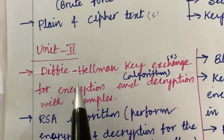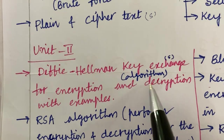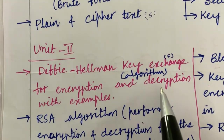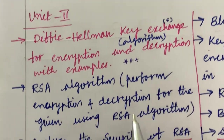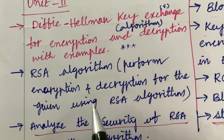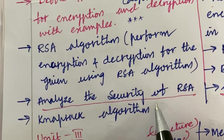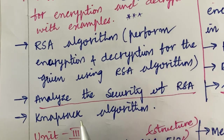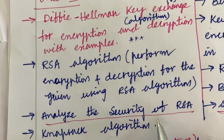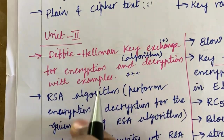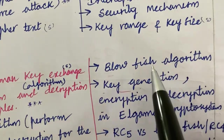Let's move on to Unit 2. Unit 2 is all about the Diffie-Hellman key exchange algorithm — encryption and decryption with an example — which is one of the very important and lengthy long questions. RSA algorithm: perform encryption and decryption using RSA algorithm. Analyze the security of RSA may be a short question, and the Knapsack algorithm may also be a short question — a 3 and 4 mark combination — appearing in 4A and 4B.